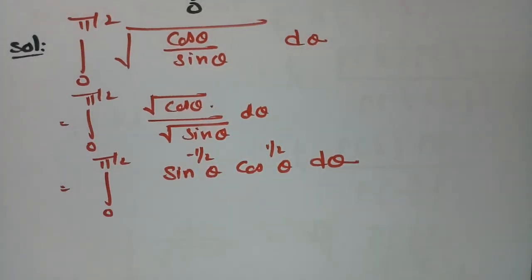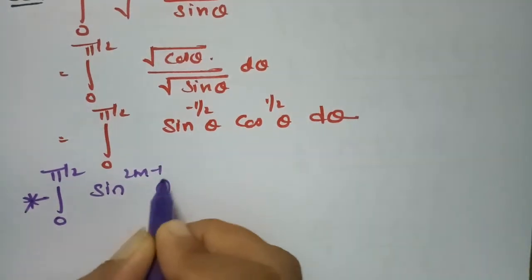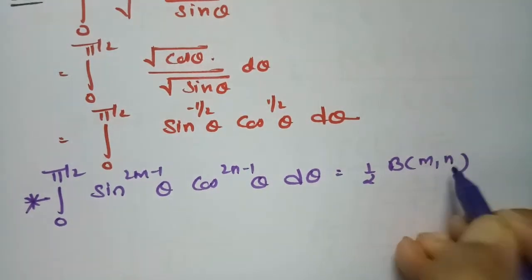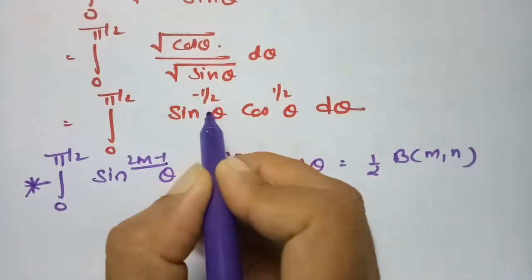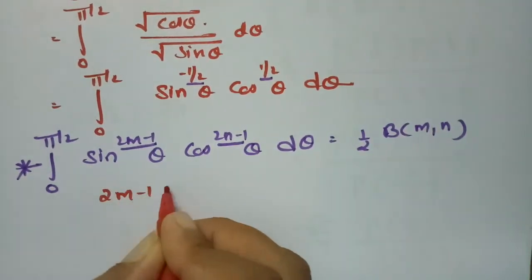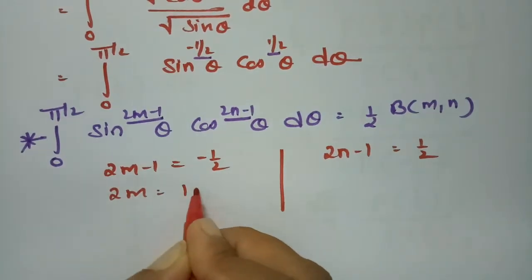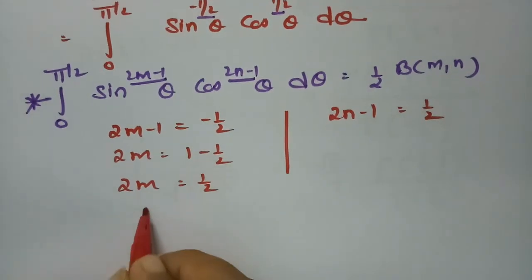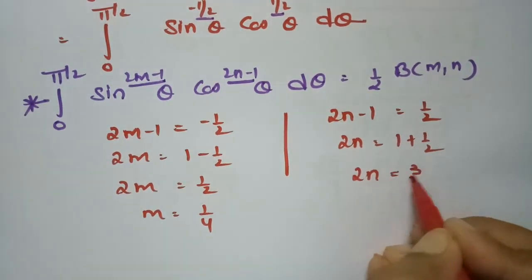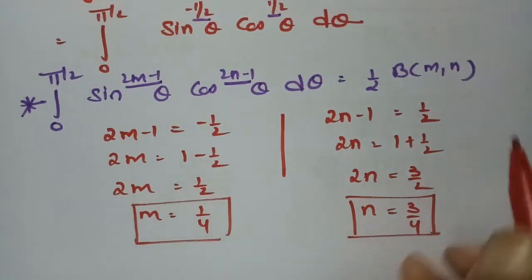We apply the formula ∫₀^(π/2) sin^(2m−1) θ · cos^(2n−1) θ dθ = (1/2) · β(m, n). Comparing: 2m − 1 = −1/2 gives m = 1/4, and 2n − 1 = 1/2 gives 2n = 3/2, so n = 3/4. These are our m and n values.